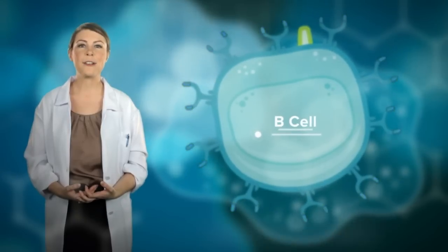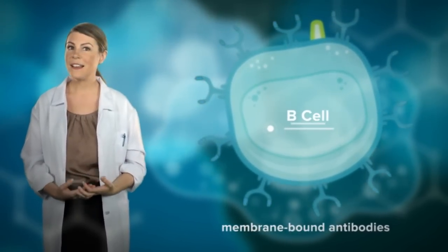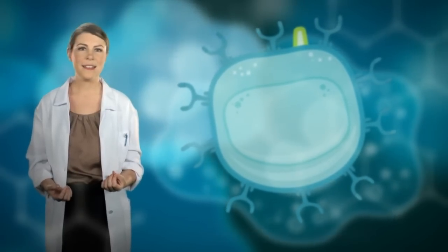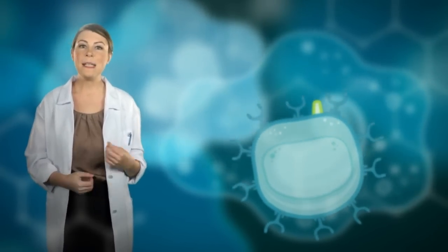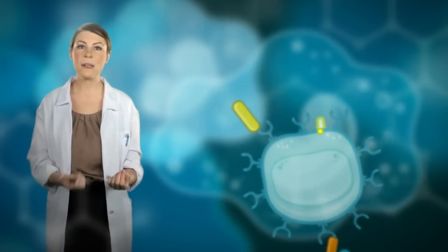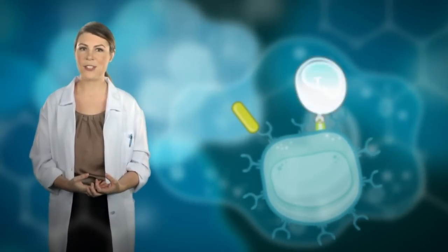These B cells are covered in membrane-bound antibodies that react to specific kinds of pathogens that may be floating around in the body. To be activated, a B cell must encounter a particular kind of pathogen, along with a helper T cell, which has recognized the same kind of pathogen.